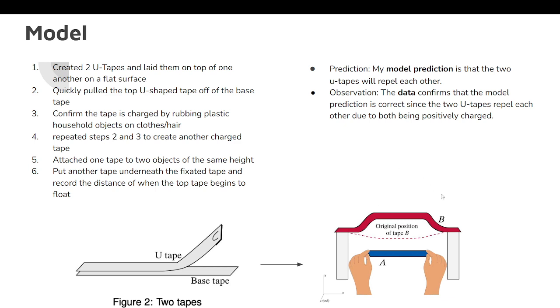My prediction before this was that the two tapes would repel each other, and this is because they were charged the same way and therefore would have the same sign charge. In the observation, the data confirmed that, as you can see, the tapes did repel each other because they were both positively charged.